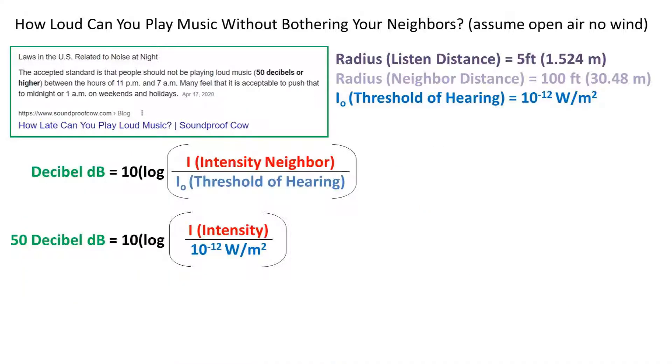First, we need to get everything out of decibels. So a decibel is equal to 10 times the log of the intensity at the neighbor's location over the threshold of hearing, which is 10 to the negative 12 watts per meter squared.